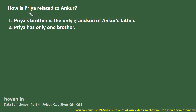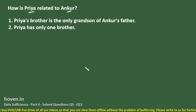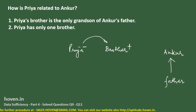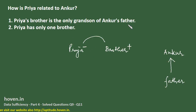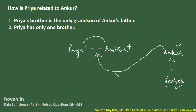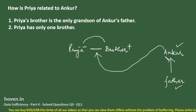How is Priya related to Ankur? Priya is female and Ankur is male. Statement one: Priya's brother is the only grandson of Ankur's father. Drawing a diagram, if Priya's brother is the only grandson of Ankur's father, then Ankur must be the father of Priya and her brother. So from this statement, we can say Priya is Ankur's daughter — statement one alone is sufficient.